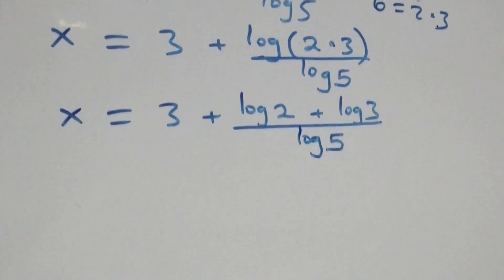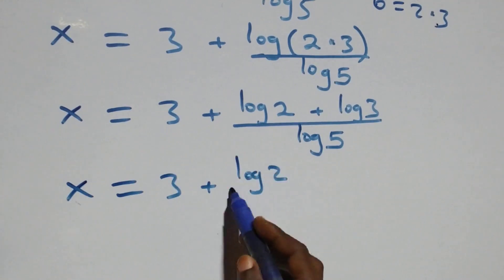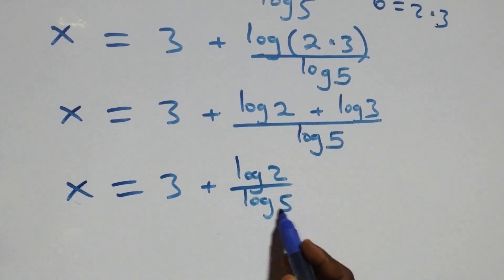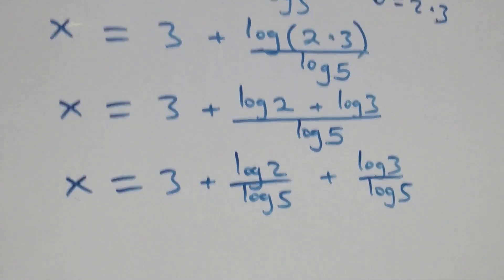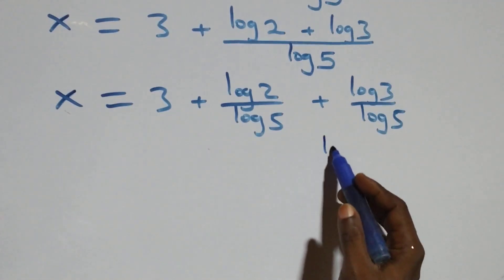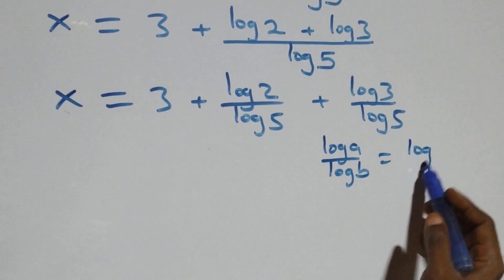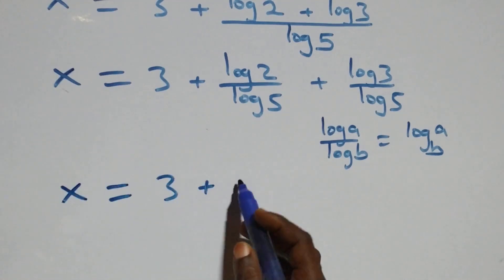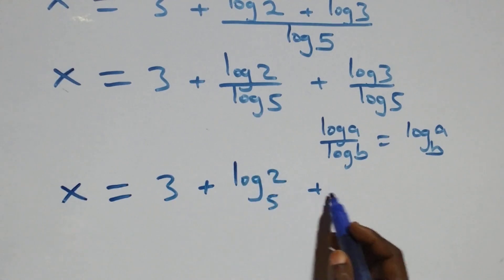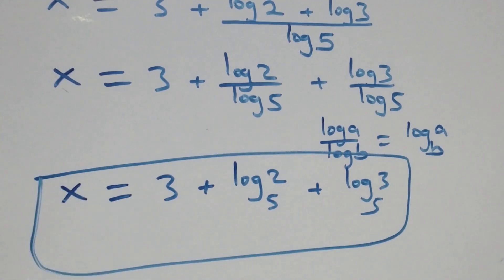We separate into two fractions: x equals 3 plus log 2 over log 5 plus log 3 over log 5. Applying the change of base rule — log a over log b equals log a to base b — this becomes x equals 3 plus log₅2 plus log₅3. That is the value of x in this problem.